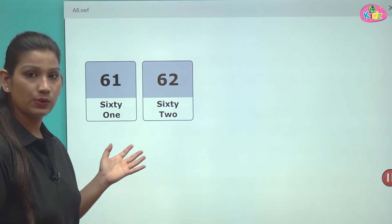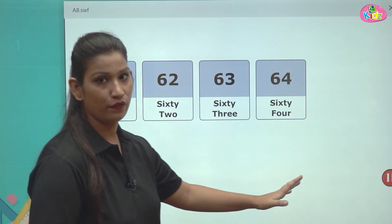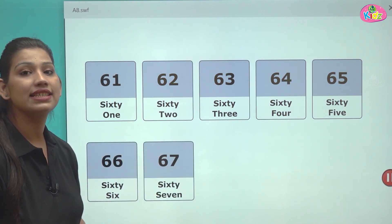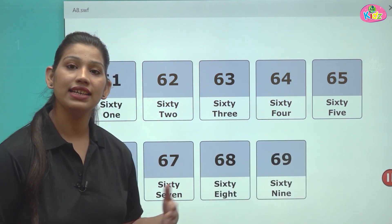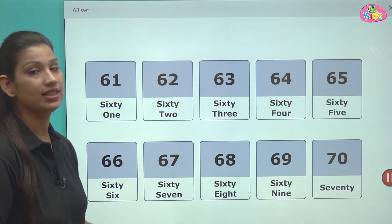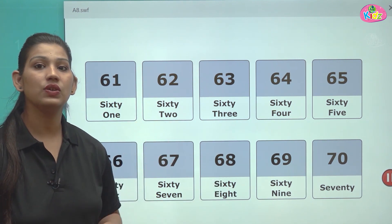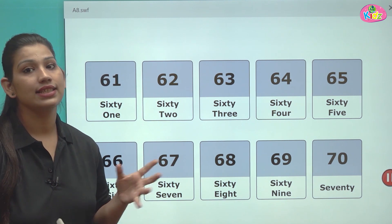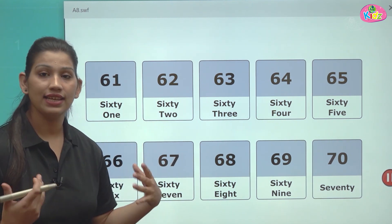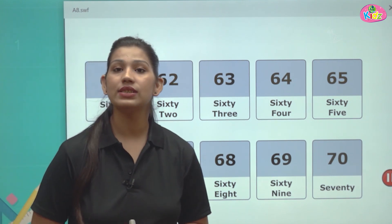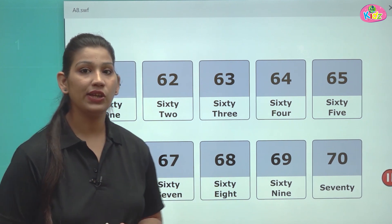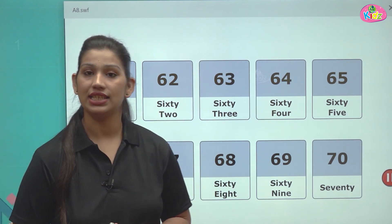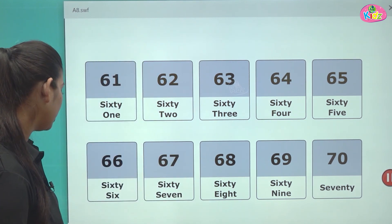After 60, there comes number 61, 62, 63, 64, 65, 66, 67, 68, 69 and 70. This is from 61 to 70. S-I-X-T-Y, 61 to 69, and then comes up 70. S-E-V-E-N-T-Y becomes 70.